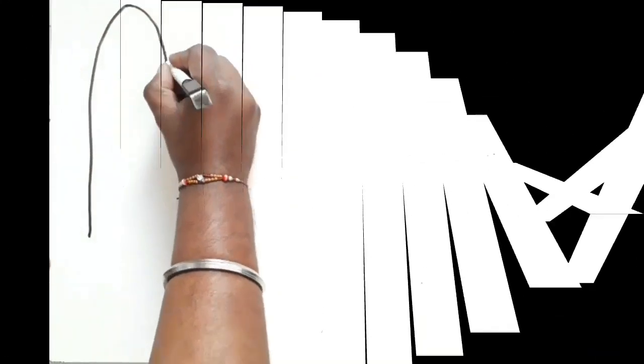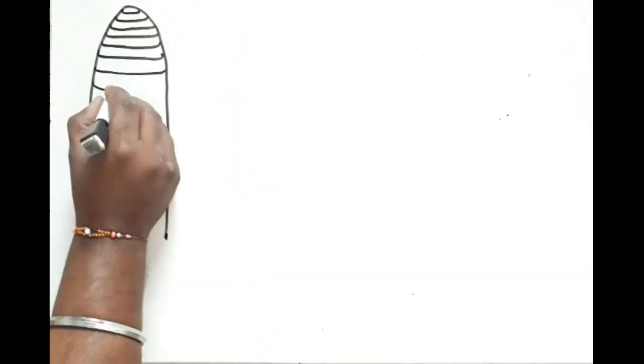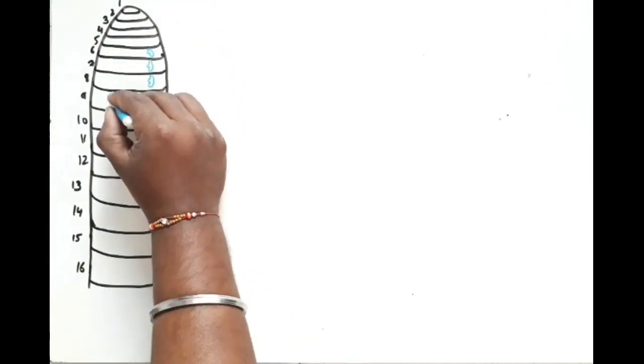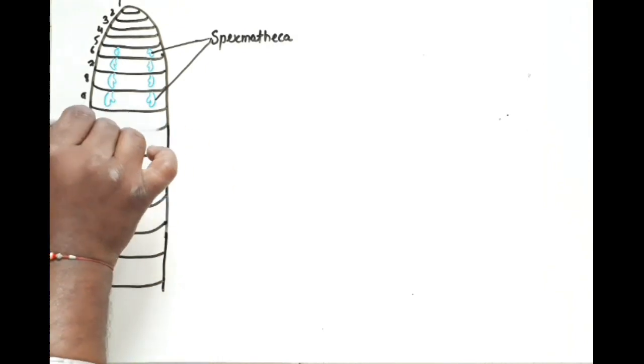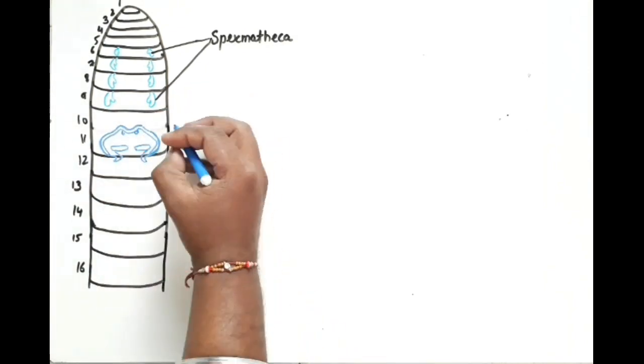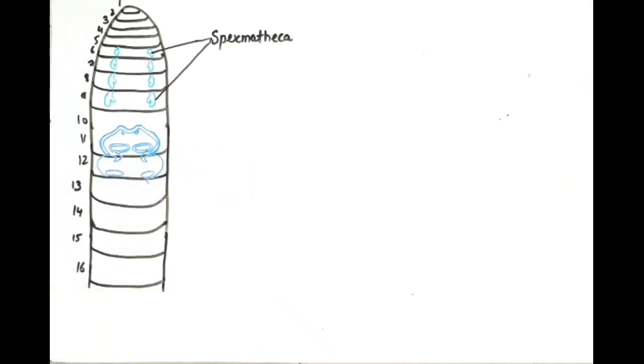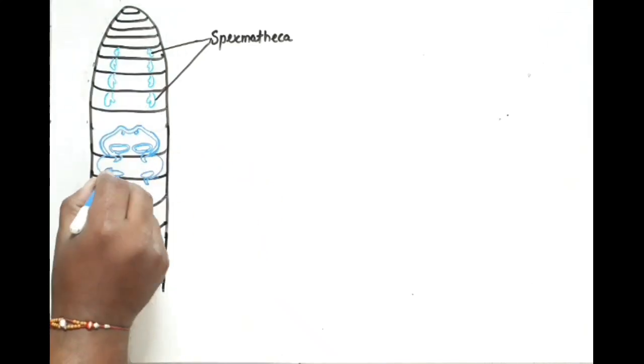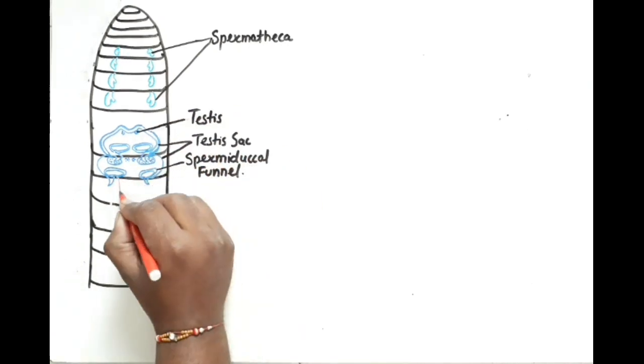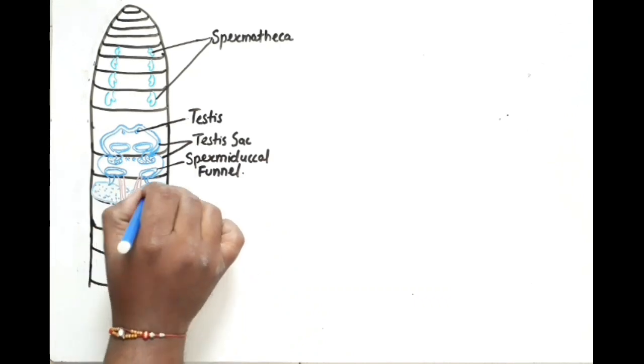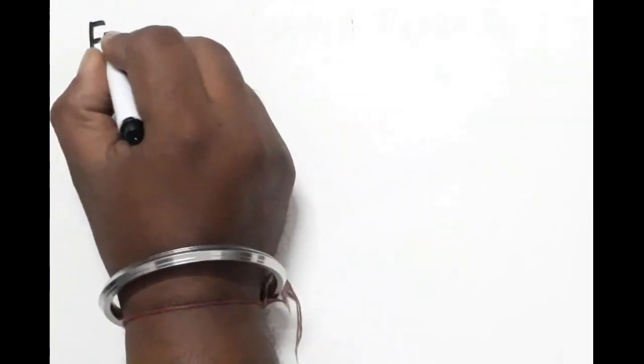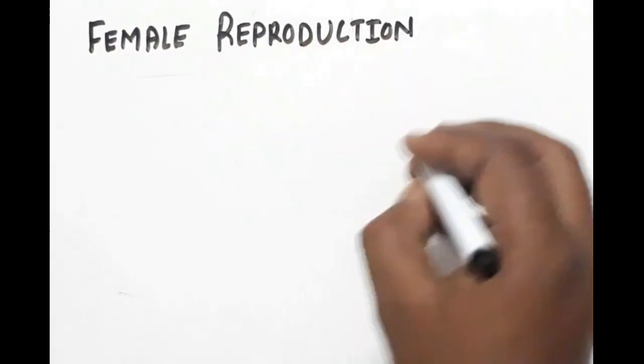Hello friends, welcome back to Gaurav Tutorials. My name is Gaurav Mishra and today we are going to talk about female reproductive system. Now as we know, the earthworm is a hermaphrodite, that means male and female reproductive organs are both together. So when you draw a female reproductive organ, you have to draw the whole structure, but when you write theory, you have to focus on just talking about spermatheca, oviduct, and ovary.